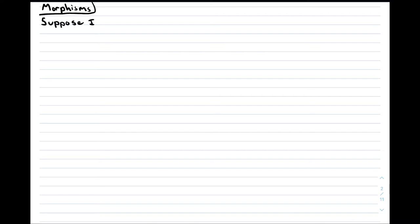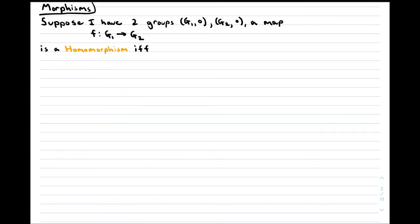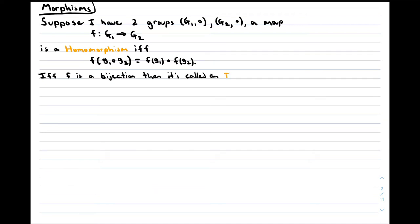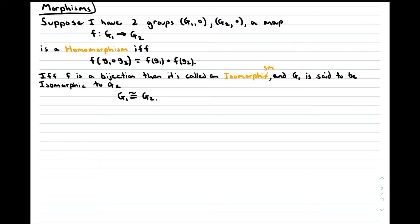When studying mathematical structures, it is often useful to think about structure-preserving maps. In the case of group theory, the structure we can preserve is the group composition law. Suppose I have two groups G1 and G2 and a function f between them. This function f is called a homomorphism if it preserves the group composition law — meaning that combining two elements of G1 and mapping the result into G2 gives the same element as mapping the two elements individually into G2 and then combining them. If this map is a bijection, then it's called an isomorphism and the two groups are called isomorphic. If two groups are isomorphic, then they are the same group — through the lens of group theory, there is no way to tell these two groups apart.